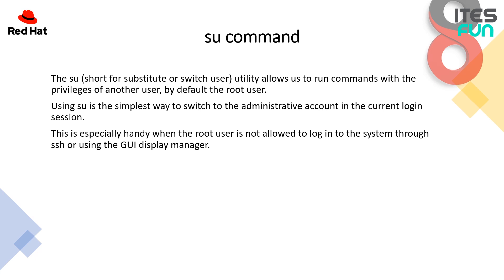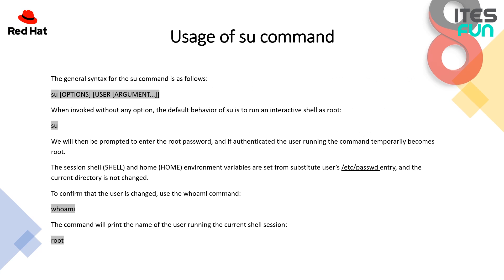This is especially handy when the root user is not allowed to log in via SSH or a GUI display manager. The general syntax of the su command is: su [options] [user] [arguments]. When invoked without any option, the default behavior of su is to run an interactive shell as root. You will then be prompted to enter the root password, and if authenticated, the user temporarily becomes root. The session shell and home environment variables are set from the substitute user's /etc/passwd entry, and the current directory is not changed.